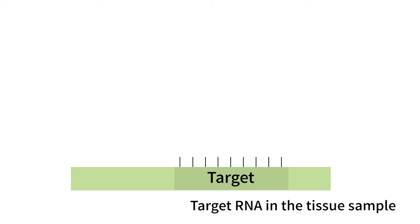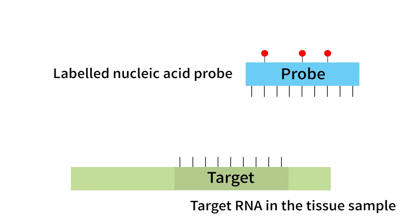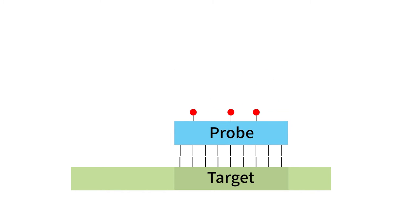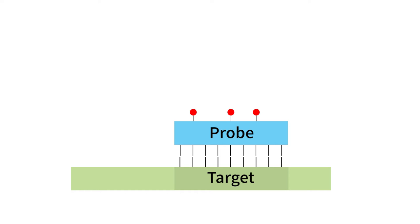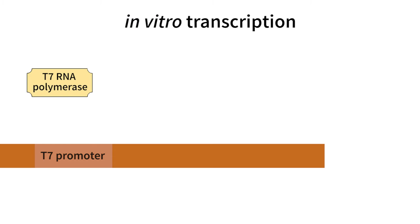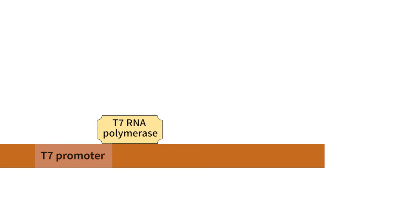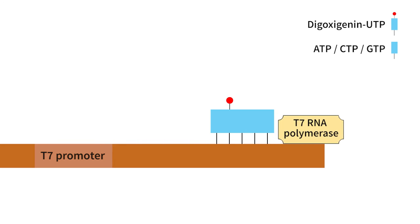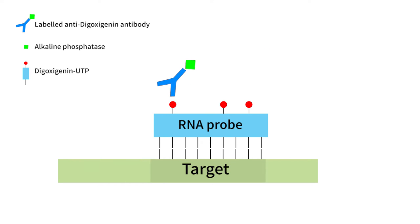Once the tissue has been mounted on a slide, the next step is the hybridization. In situ hybridization uses nucleic acid probes, which hybridize with a nucleic acid target in the tissue sample. A probe is just a single stranded nucleic acid which is complementary to the nucleic acid strand we are looking for. The probes are labeled during in vitro transcription reaction with digoxigenin, and this label will eventually be detected using anti-digoxigenin antibodies.